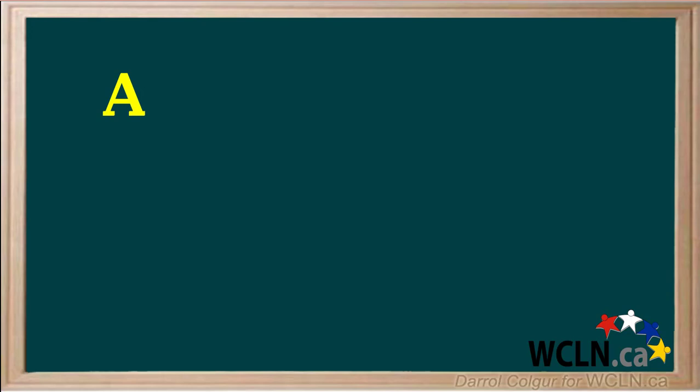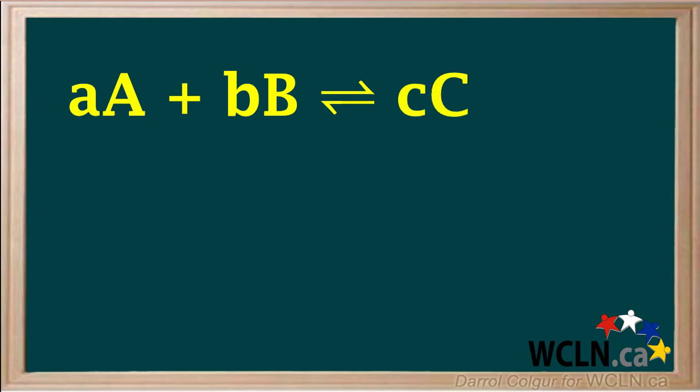We'll write a generic equilibrium equation. We'll start with the reactant which we'll call substance capital A, with its coefficient lowercase a, plus the reactant substance B with the coefficient b. These are in equilibrium with the product C with the coefficient c, plus the product D with the coefficient d. What we're doing can be used for any number of reactants and products, but we'll represent two reactants and two products here.